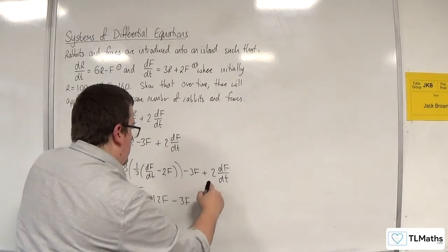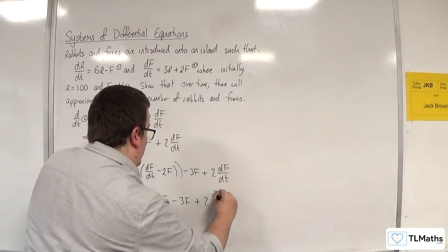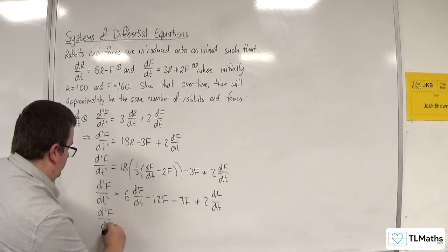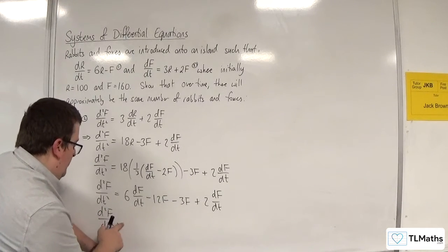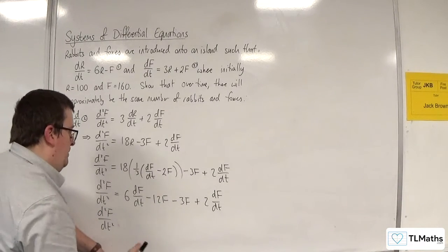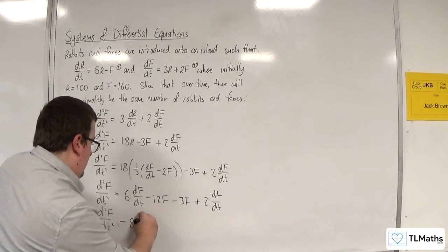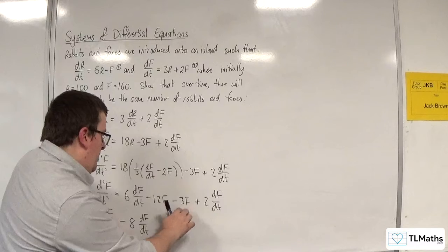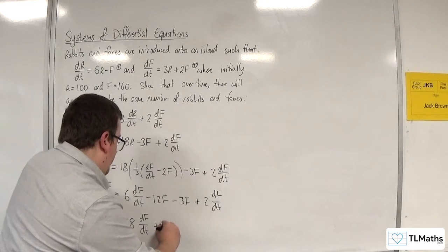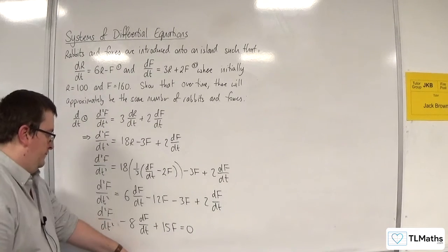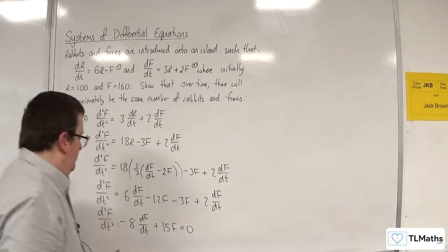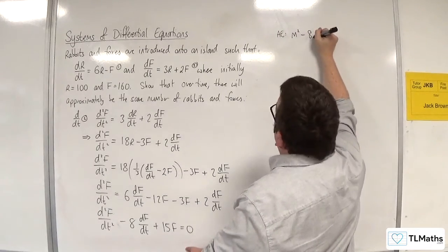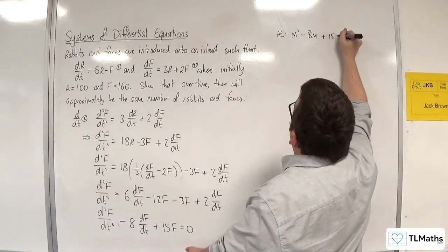Collecting all terms and moving everything to the left-hand side: d²f/dt² - 8(df/dt) + 15f = 0. The auxiliary equation is therefore m² - 8m + 15 = 0.